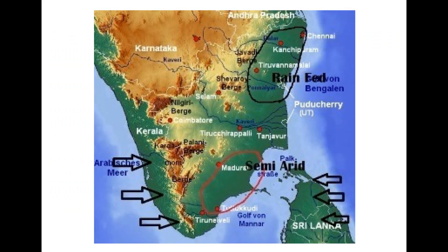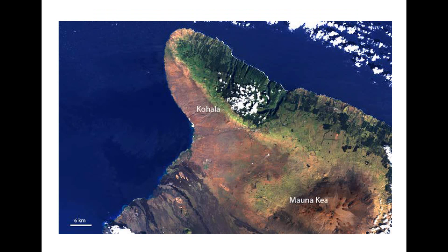The second best example of a rain shadow region is the eastern side of the Western Ghats. The eastern side of Karnataka and the western border of Tamil Nadu are included in this rain shadow region. Rajasthan Desert and Shillong are other examples of rain shadow regions.